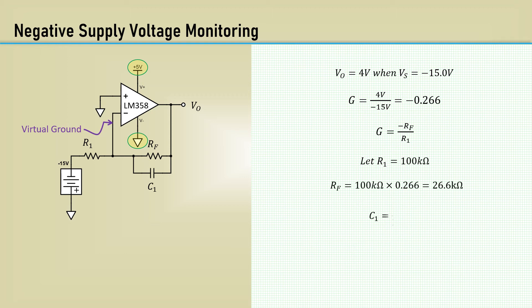Letting R1 equal 100k yields RF as 26.6k. We can also easily roll off power supply noise by using the op-amp as an active filter by adding a single capacitor C1. With a cutoff frequency of 100 hertz, we get C1 as 0.06 microfarads.